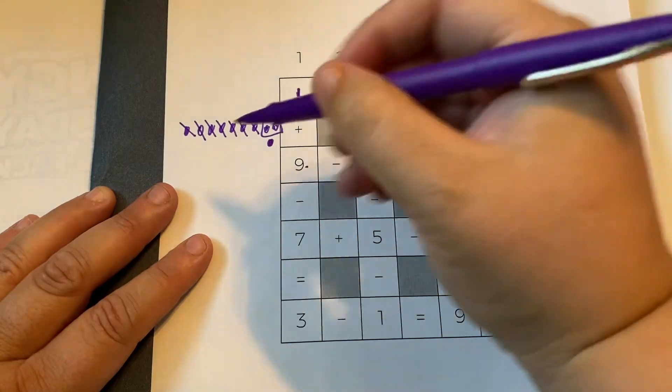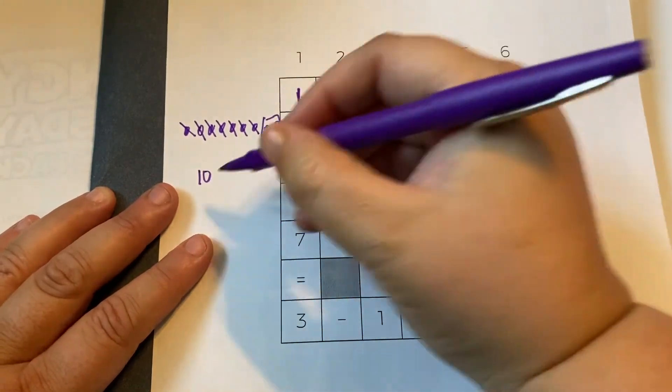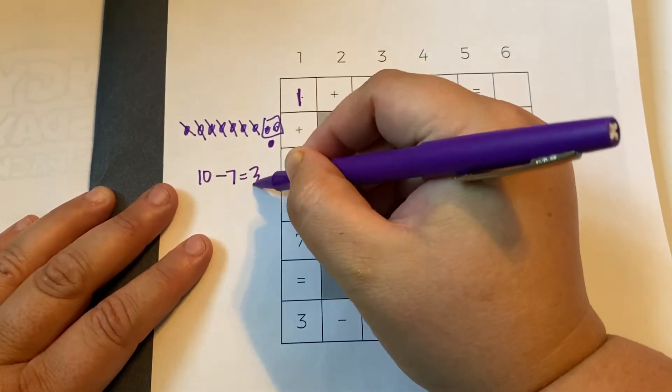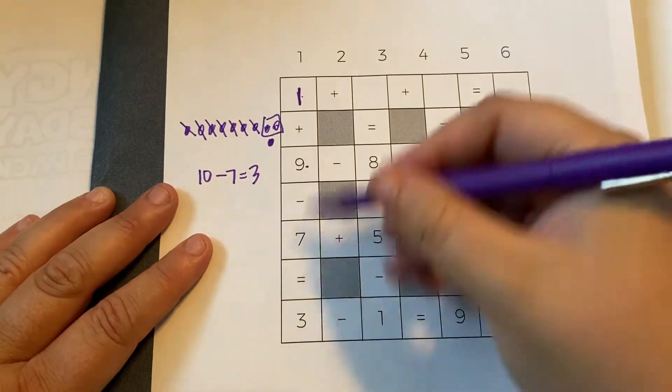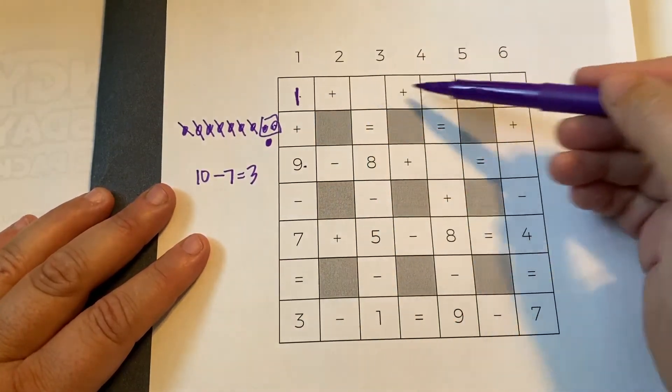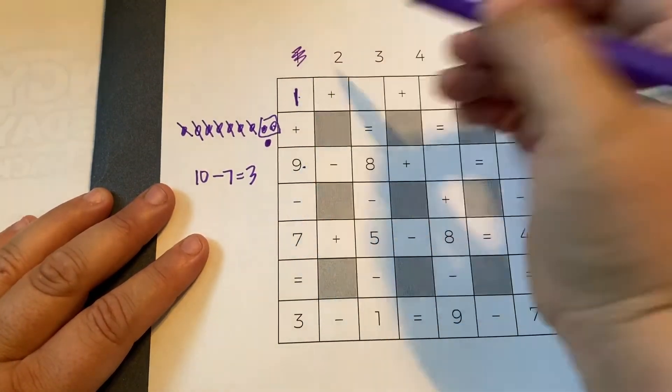One plus nine is ten. Ten minus seven is three. So that's correct. So we filled in this. So we're one closer and we already used the one.